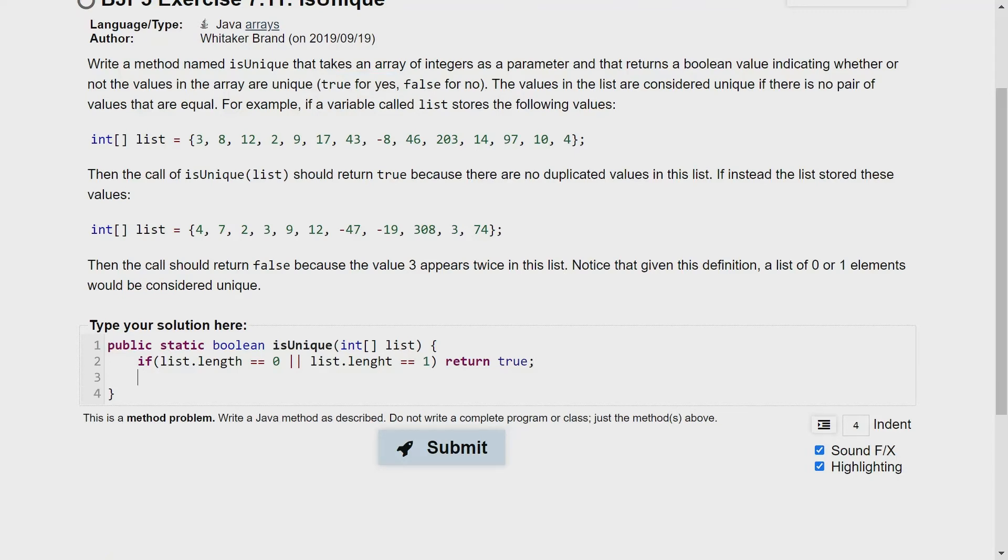Now to solve for the other cases, we're going to basically be checking each number one at a time. So for instance, if we take a look at the 3 first, we're going to be taking a look at the 3 and seeing is the 3 equal to 8? No. Is the 3 equal to 12? No. Is the 3 equal to 2? No. Is the 3 equal to 9? No, and so on and so forth.